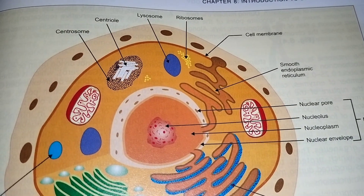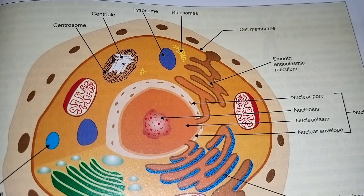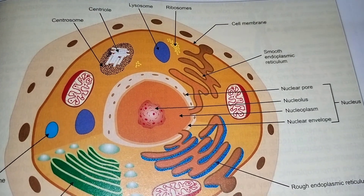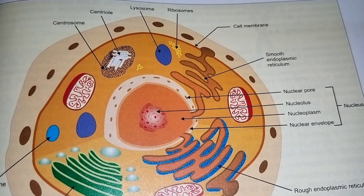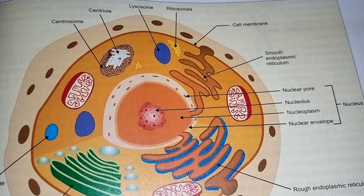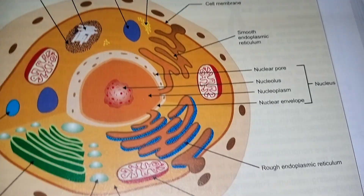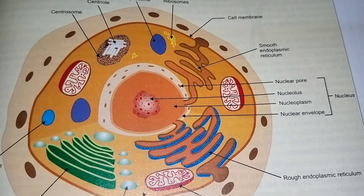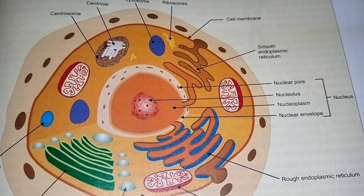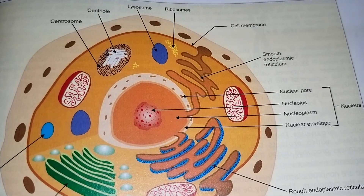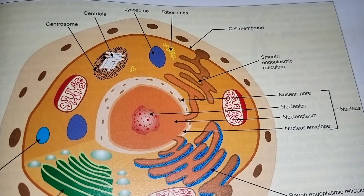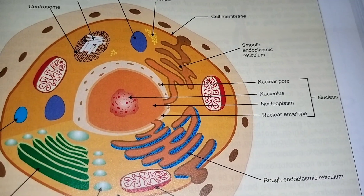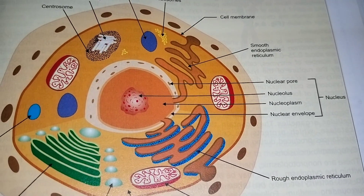Endoplasmic reticulum — there are two types: the one where ribosomes are present is rough endoplasmic reticulum, and the one where ribosomes are not present is smooth endoplasmic reticulum. Then the nucleus.